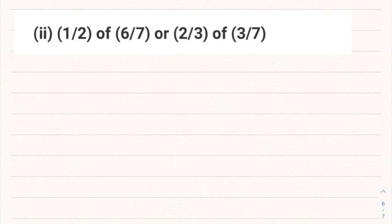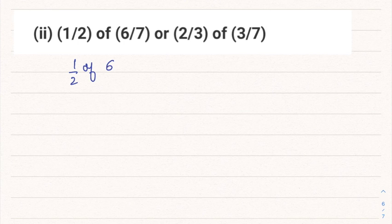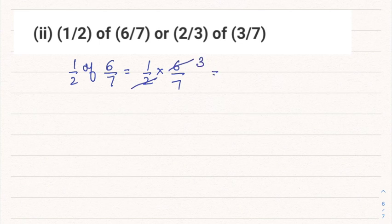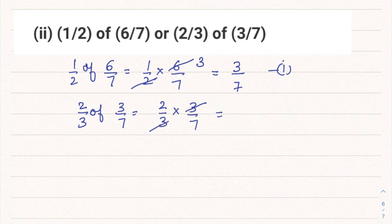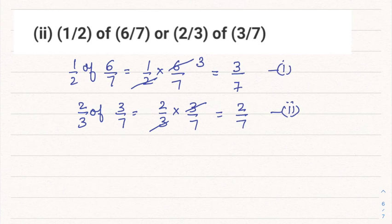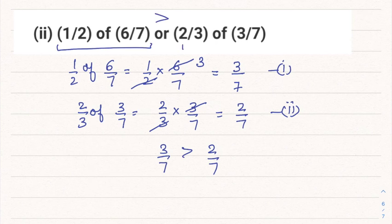Second part: Which is greater — half of 6/7 or 2/3 of 3/7? Half of 6/7 means 1/2 multiplied by 6/7; 2 and 6 cancel, giving 3/7. Then 2/3 of 3/7 means 2/3 multiplied by 3/7; the 3s cancel, giving 2/7. Since both fractions already have the same denominator, we can see directly that 3/7 is greater than 2/7. So half of 6/7 is greater than 2/3 of 3/7.